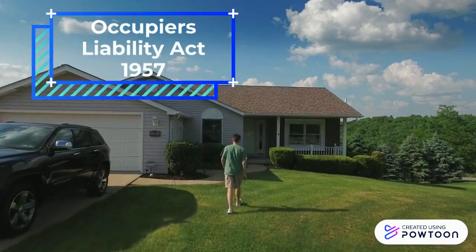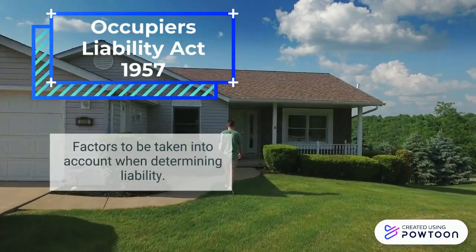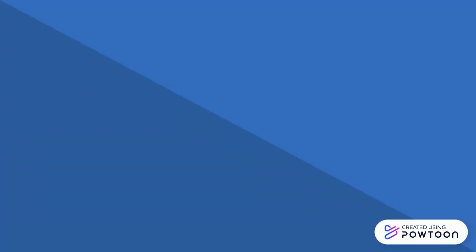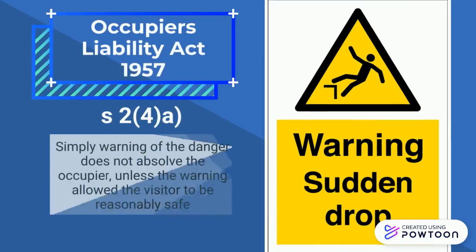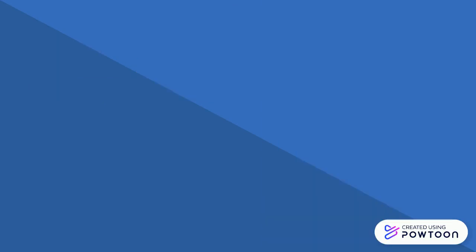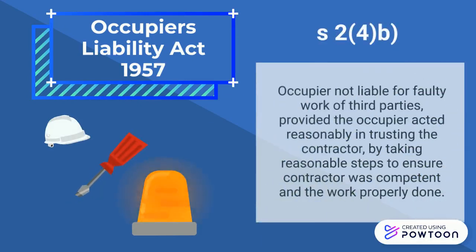There are also rules determining what should be taken into account when assessing if the occupier is liable. First, simply warning of the danger does not absolve the occupier unless the warning allowed the visitor to be reasonably safe. And secondly, if damage is caused by the faulty work of a third party, the courts will determine if the occupier was reasonable to assume the third party was competent.